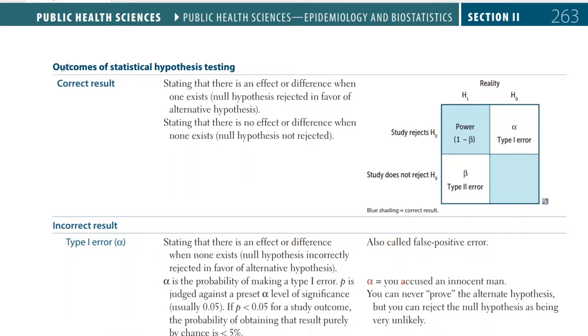Welcome back to another Biostats video. This time we'll be talking about the outcomes of statistical hypothesis testing. In order to talk about them, we first need to set up a few premises. So we're going to start with the first one, which is: what are H0 and H1?